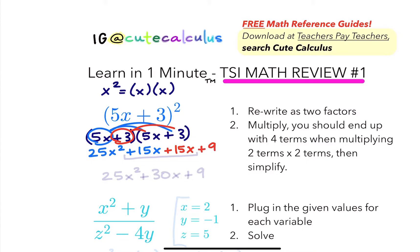So when you're multiplying two terms times two terms, you should end up with four terms. And then these two here in the middle are both x to the first power. So we're going to combine like terms, and we'll get 25x squared plus 30x plus 9 is our final answer.